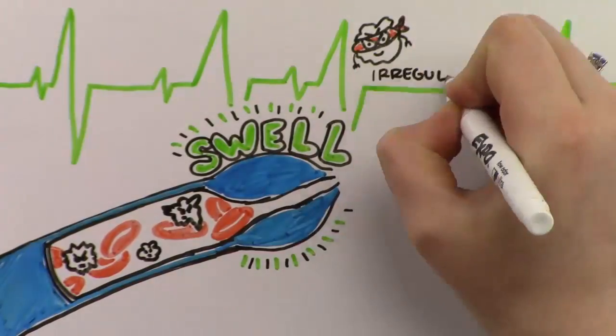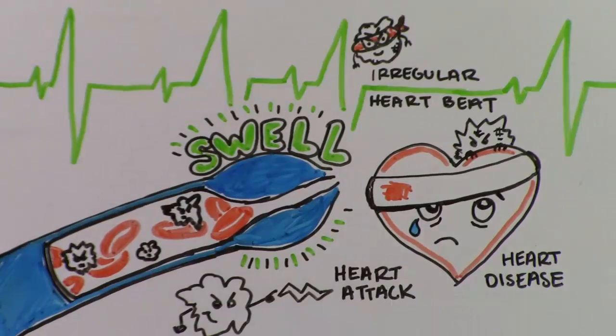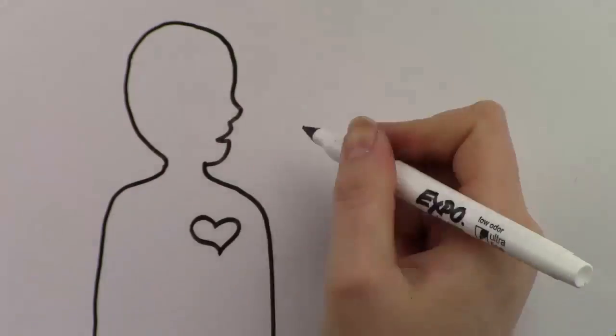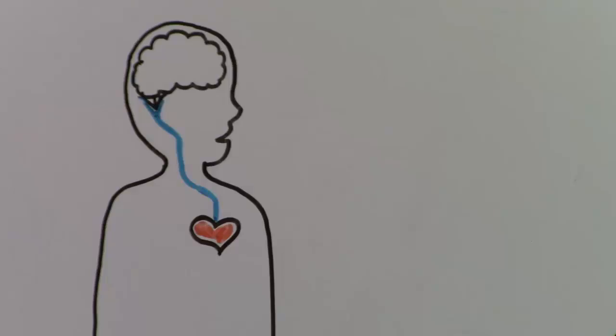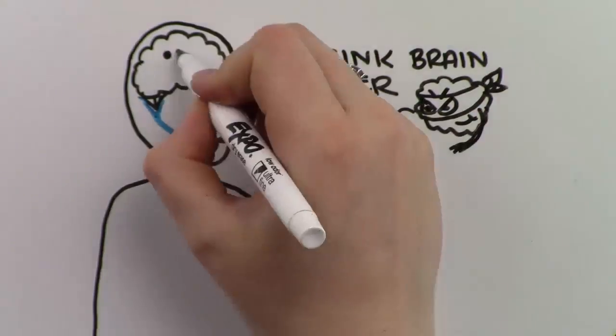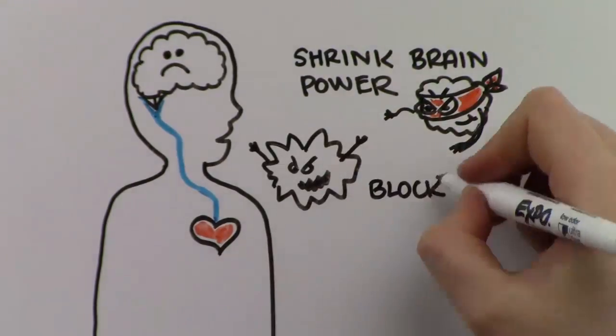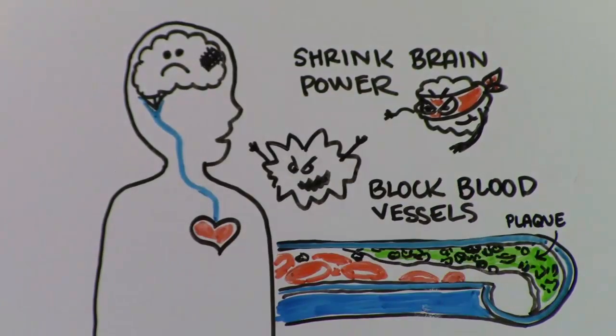Years of breathing Smidge and his crew can cause irregular heartbeat, heart disease, and heart attacks. From your heart, dissolved particles travel in the bloodstream to your head, where they shrink your brain power or even block blood vessels. A blocked blood vessel will kill part of your brain.